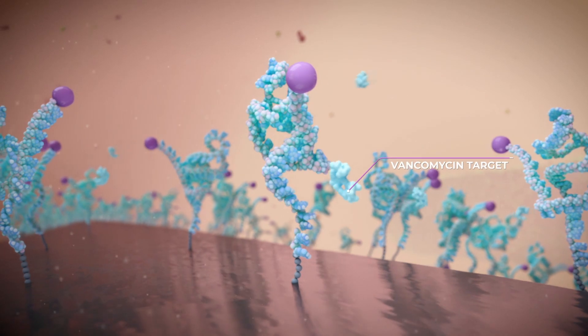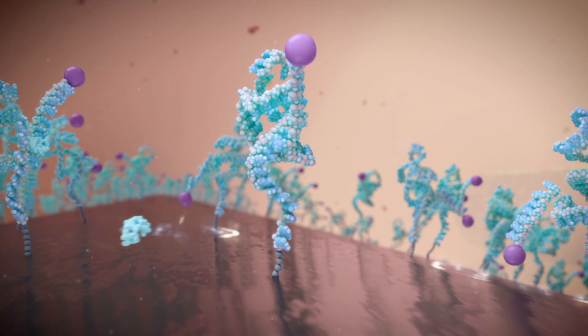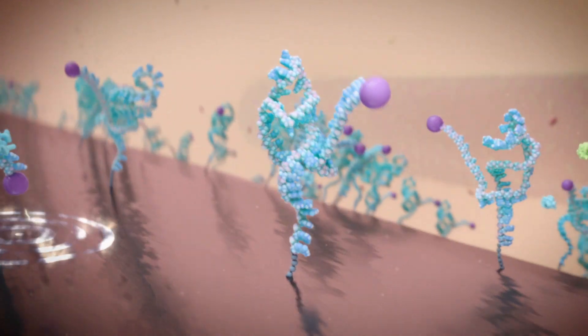When this happens, it changes shape, resulting in a signal change, which our software uses to determine the presence and concentration of the target.